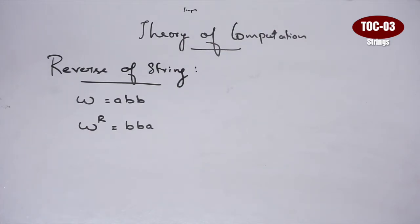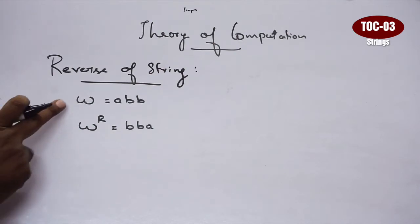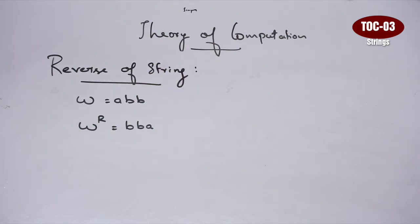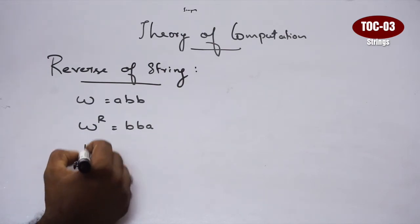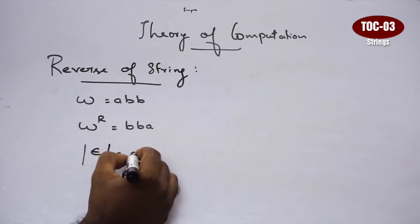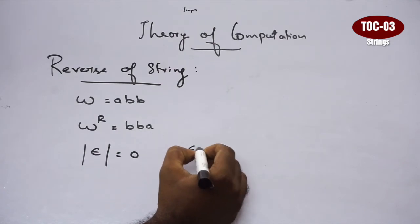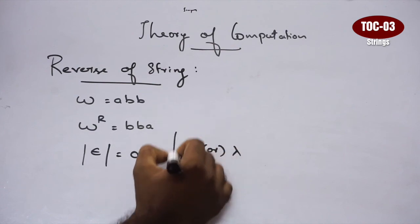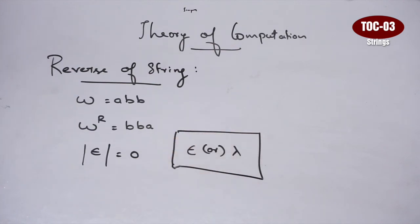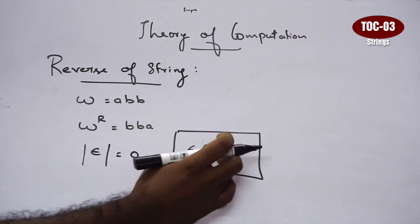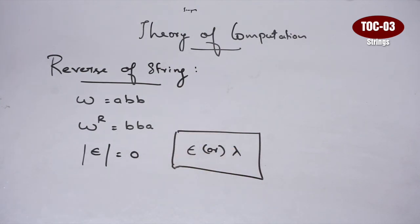So what did we look at in this video? Just strings — that's why we looked at the alphabet combination. Then we looked at the length of string, where we count the length. Then reverse of string, where the notation is w^r. The string of length 0 is epsilon, also mentioned as lambda. So lambda is 0.